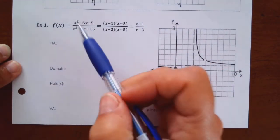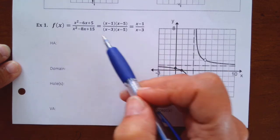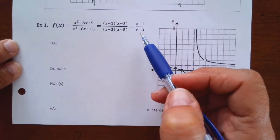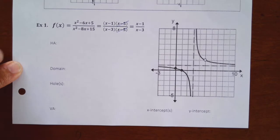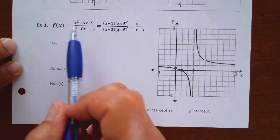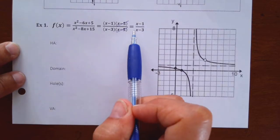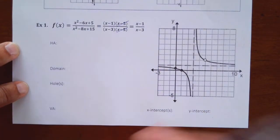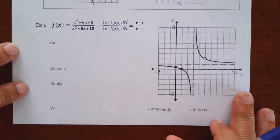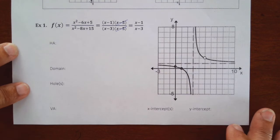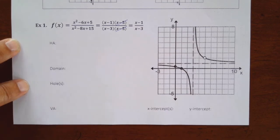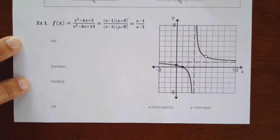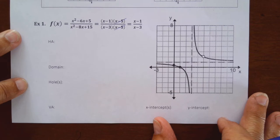If you look at example one, this is the function they gave us. It needs to be factored and simplified. Notice when we simplified it, we canceled out those x-minus-five factors. Every piece of this is important. Some of the answers come from the original problem; some would be easier to find from the reduced form. We've got five of these to do together, so hopefully by the end you'll be getting the hang of this.